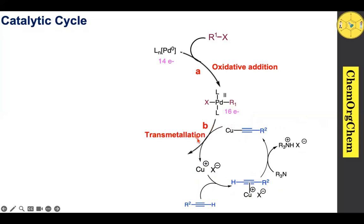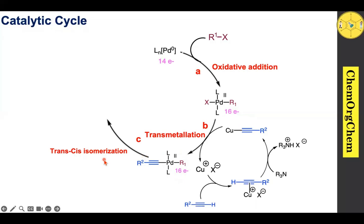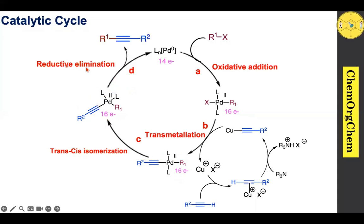The copper acetylide and the palladium complex then undergo transmetalation, generating a new 16-electron palladium complex. This 16-electron species then undergoes trans-to-cis isomerization, followed by reductive elimination, which produces the carbon-carbon coupling product.